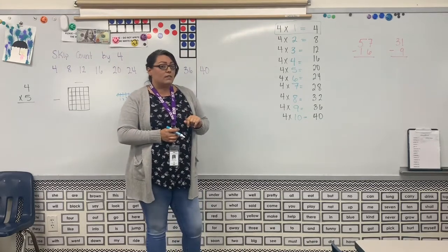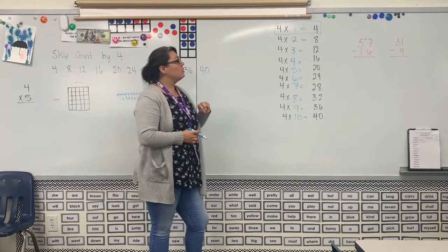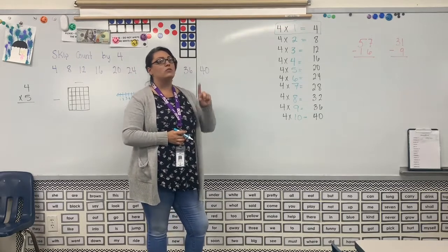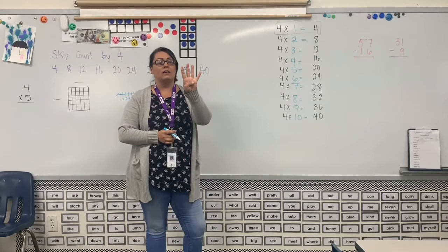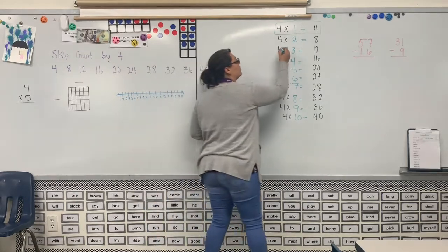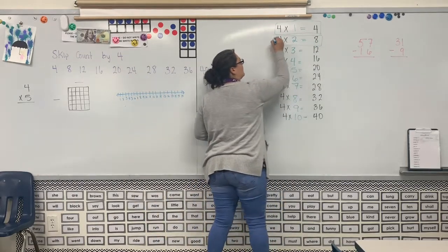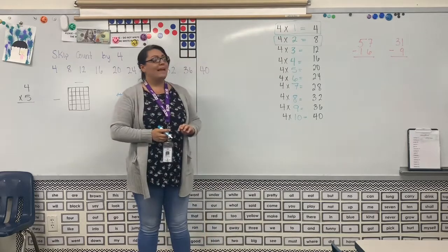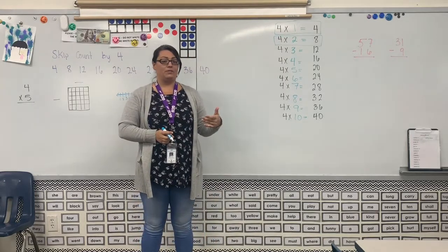We also talked about skip counting by twos. So when we skip count by twos, two, four, six, eight, 4 × 2 is 8. So we've talked about this number. And then last week we skip counted by threes.